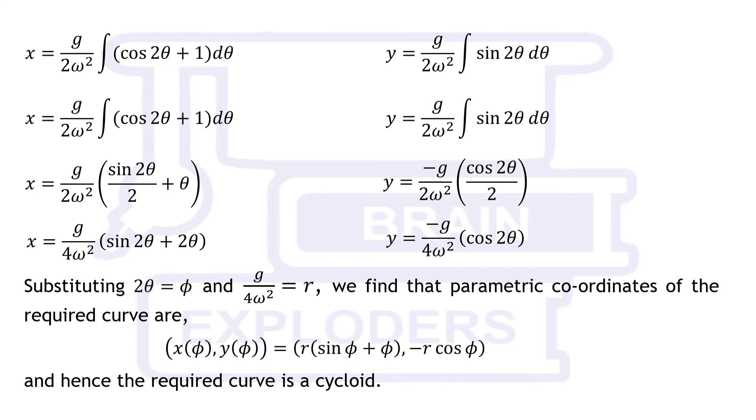On substituting phi in place of 2 theta and r in place of g over 4 omega squared, we find that obtained equation is the equation of a cycloid.